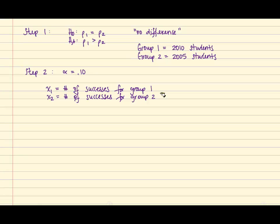The number of successes can be found by multiplying the sample proportion by the sample size. So for group 1, we take .30 times the sample size of 1000 and we obtain 300. For group 2, the sample proportion was .25 times the sample size of 1000 and that's equal to 250.